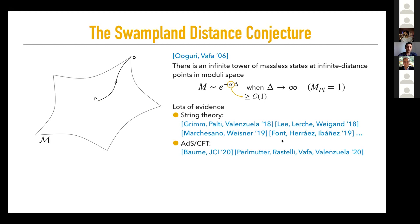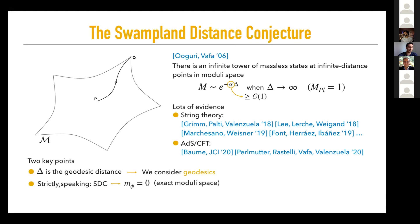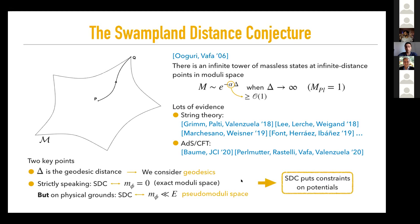For my talk, it's important to remark two key points about the Swampland distance conjecture. First, that delta is the geodesic distance, and therefore we are considering geodesics. Second, that even though strictly speaking the Swampland distance conjecture is about the moduli space — parameterized by exactly massless scalars — on physical grounds, we expect this conjecture to be true as long as we are at some energy scale in which some scalars are sufficiently massless. This is what we call in the paper a pseudo-moduli space.